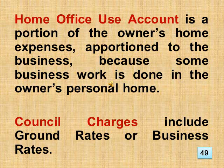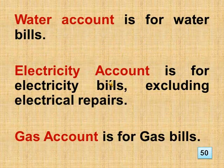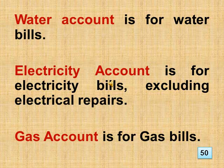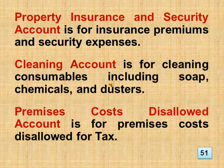Council charges include ground rates or business rates. Water account is for water bills. Electricity account is for electricity bills, excluding electrical repairs. Gas account is for gas bills. Property insurance and security account is for insurance premiums and security expenses. Cleaning account is for cleaning consumables including soap, chemicals, and dusters. Premises costs disallowed account is for premises costs disallowed for tax.